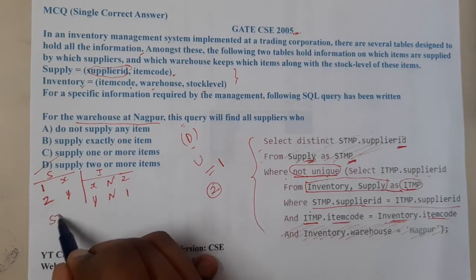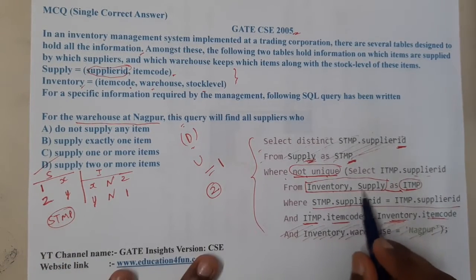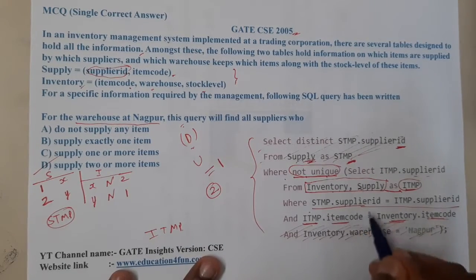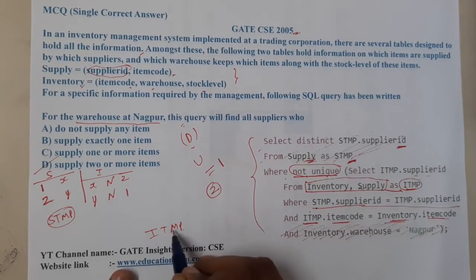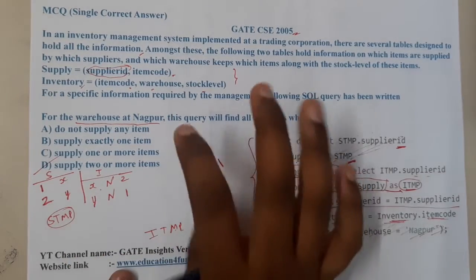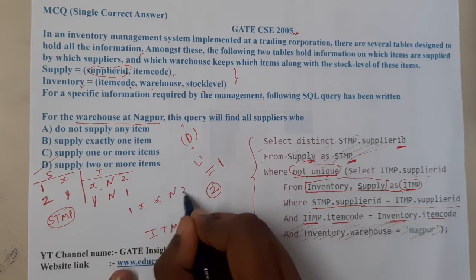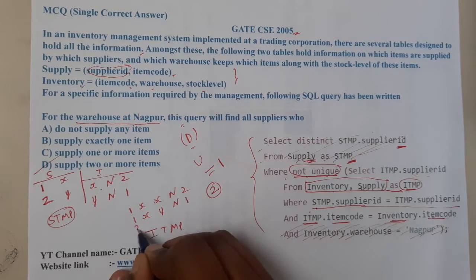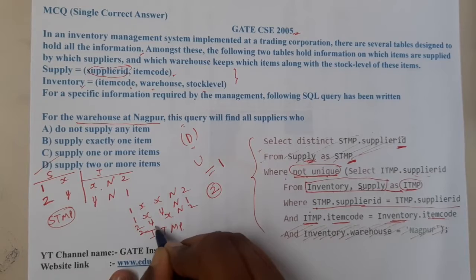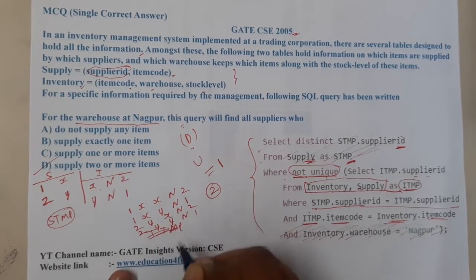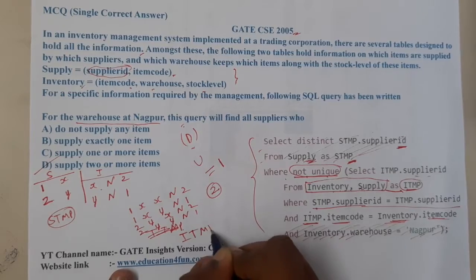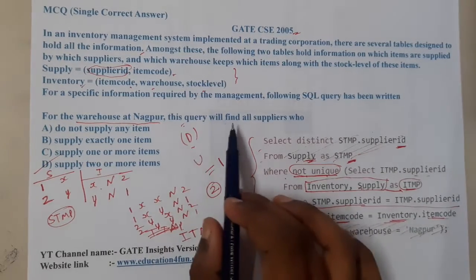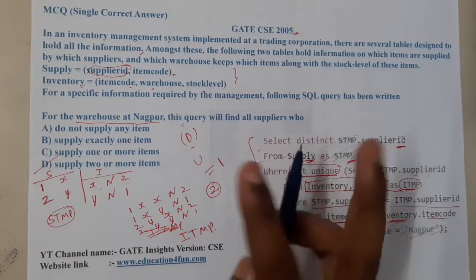We take the supplier table as stmp, then perform inventory versus supply to get the new table called itmp. When we cross multiply them we get four entries: supplier 1 item X with Nagpur stock 2, supplier 1 item X with Y, supplier 2 item Y with X Nagpur, and supplier 2 item Y with Y Nagpur stock 1. This is the table called itmp.